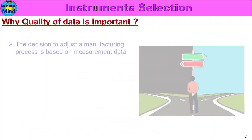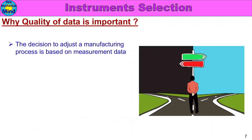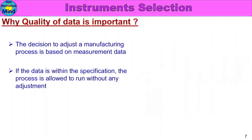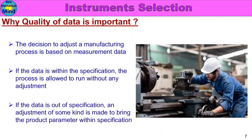Why is quality of data important? The decision to adjust the manufacturing process is based on measurement data. In manufacturing, machine settings are adjusted based on inspection and observed values. If the data is within specification, the process is allowed to run without any adjustment — one product parameter within specification means no adjustment needed. If the data is out of specification, an adjustment of some kind is made to bring the product parameter within specification.